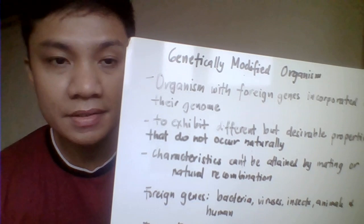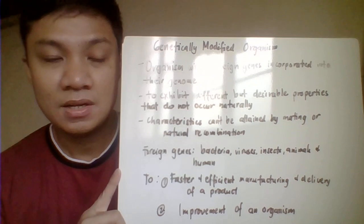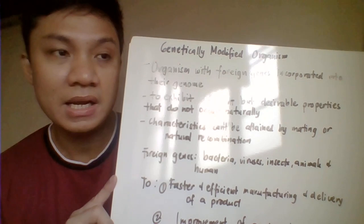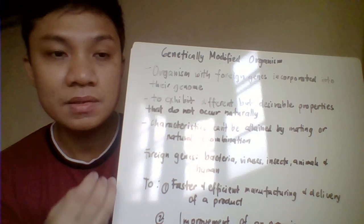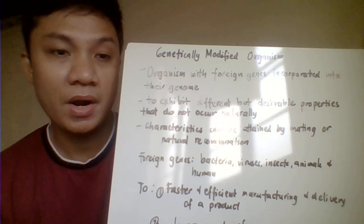Today we're going to discuss about GMOs or genetically modified organisms. The production of GMOs requires a genetic recombination process, where you try to combine the genomic structure of the host by incorporating DNA coming from foreign organisms. You insert that foreign DNA into the genomic structure of the host organism, recombine them, and produce a particular product — and that becomes your genetically modified organism.